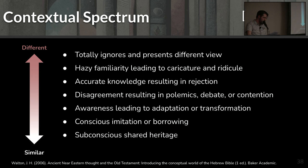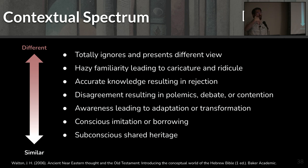Sixth, a case for literary borrowing requires identification of likely channels of transmission. That's what Alvin forgot to do — he just said they're similar, therefore they must be copied. Unless you can actually identify what is the causal chain that leads from this text actually getting into that other text, then you don't really have a case for borrowing.